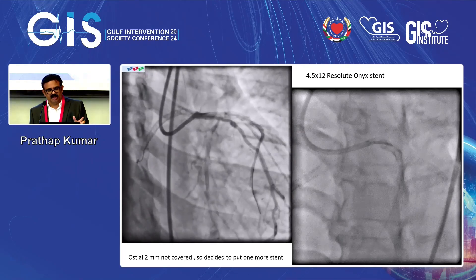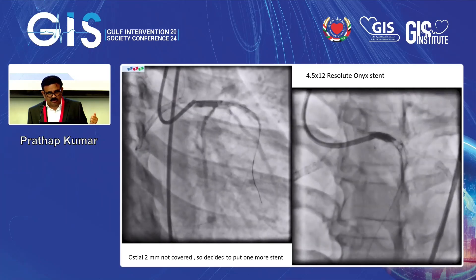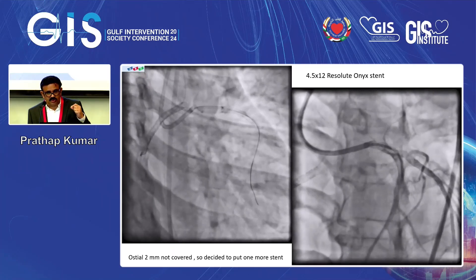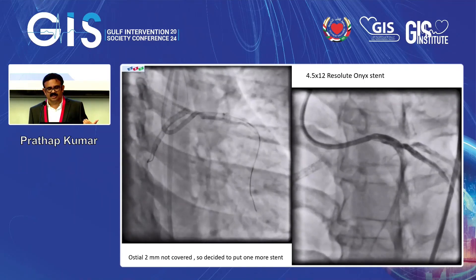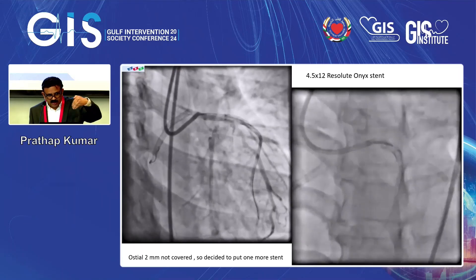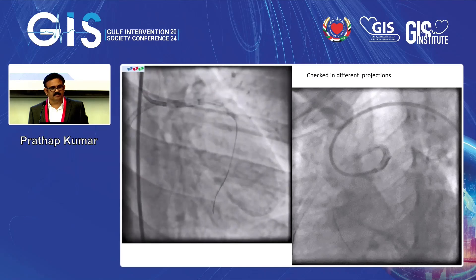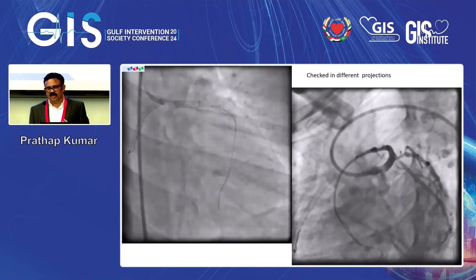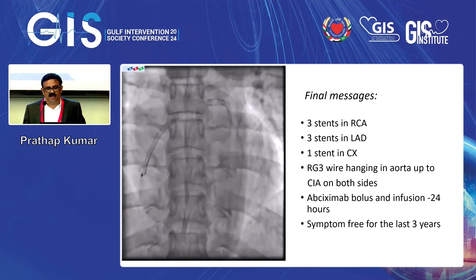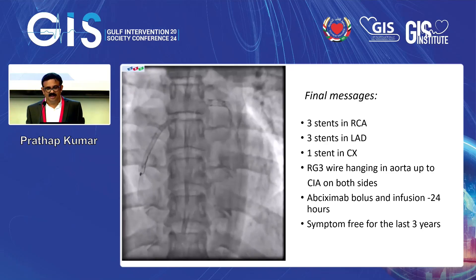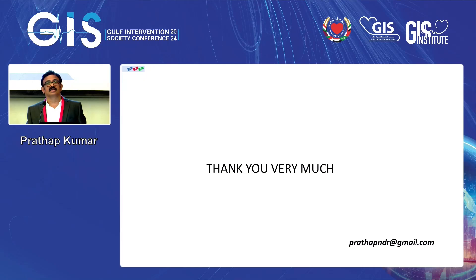Then I saw there was still an issue — the RG3 wire was bare in the proximal ostio-proximal part of the LMCA. I cannot keep that wire there because it will create thrombus. I took a 4.5x12mm stent in the LMCA from the ostium into the previous one, dilated, checked in different angles, and got excellent flow. Final summary: 3 stents in RCA, 3 stents in LAD, 1 stent in circumflex, RG3 wire hanging in the aorta up to the common iliac artery in both vessels — I pulled to the common iliac and cut and kept the wire. 6-mab infusion given for 24 hours. Patient symptom-free for the last 3 years, following up with me only.